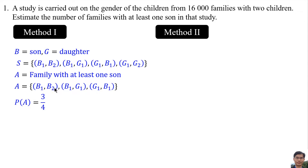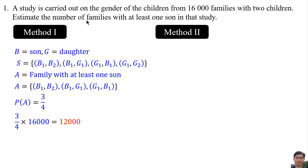3 because there are 3 elements in set A, and 4 because there are 4 elements in the sample space. There are 16,000 families. So the estimated number of families with at least one son is 3 over 4 times 16,000, which equals 12,000.